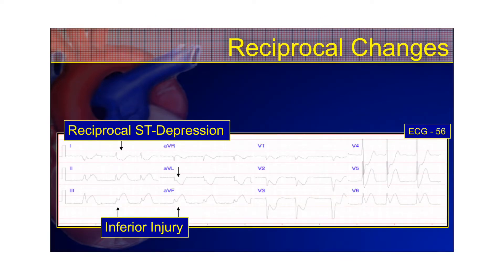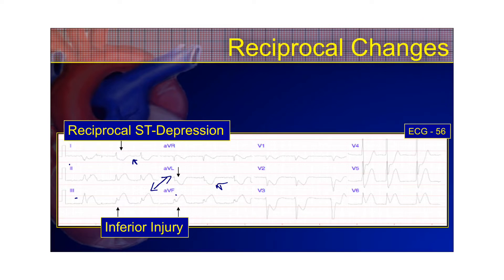A reciprocal change is going to be ST depression in the leads opposite of those where you see ST elevation. Your inferior versus your lateral leads is a great example of that. Here we have an inferior infarct in leads 2, 3, and AVF. You have a good amount of J-point elevation and ST segment elevation, and then you see in leads 1 and AVL a good amount of ST depression. Leads 3 and AVF are the most opposite two leads on a standard 12-lead EKG, and that's why you almost always see reciprocal changes when one of those leads is involved.